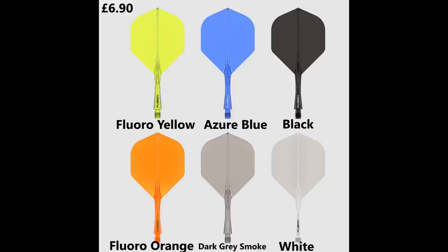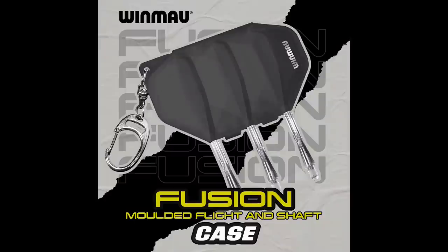They're retailed for £6.90 and they're available in medium, intermediate, and short in fluoro yellow, azul blue, solid black, fluoro orange, dark grey smoke, and solid white. You can also get a carry case or kind of like a keyring case. I think that's only available in black at present and that's £5.95.